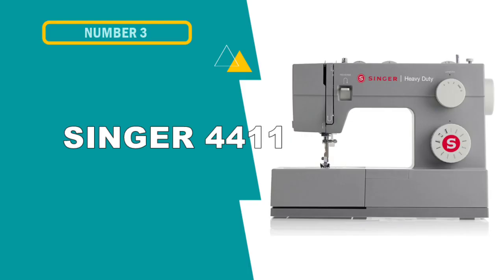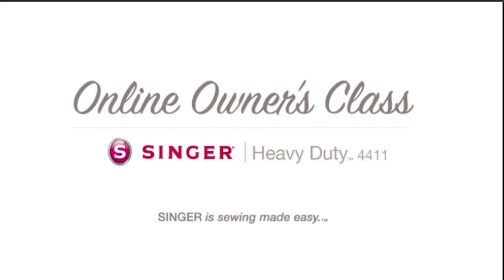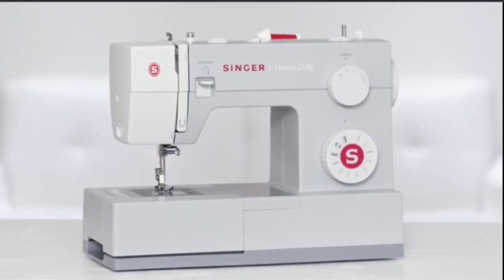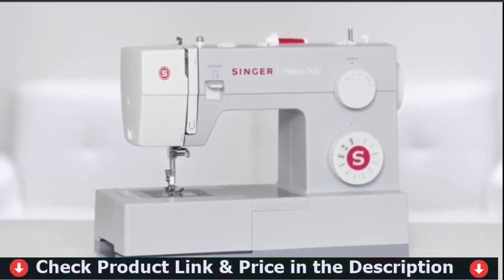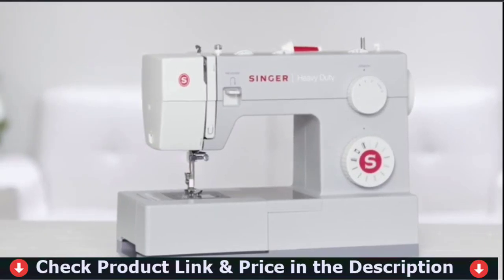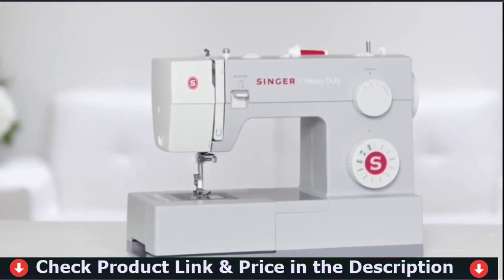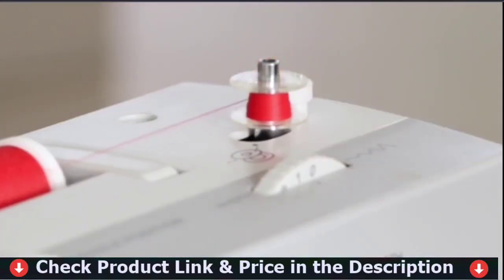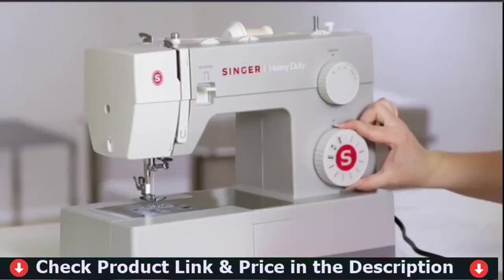Our third choice is Singer 4411 Heavy Duty Sewing Machine. It has 11 built-in stitches, 6 basic stitches, 4 decorative stitches, 1 built-in buttonhole perfect for crafts, home decor, fashion sewing and much more. The needle can be changed to any of the three available positions to add zippers or a decorative touch with topstitching and courting.